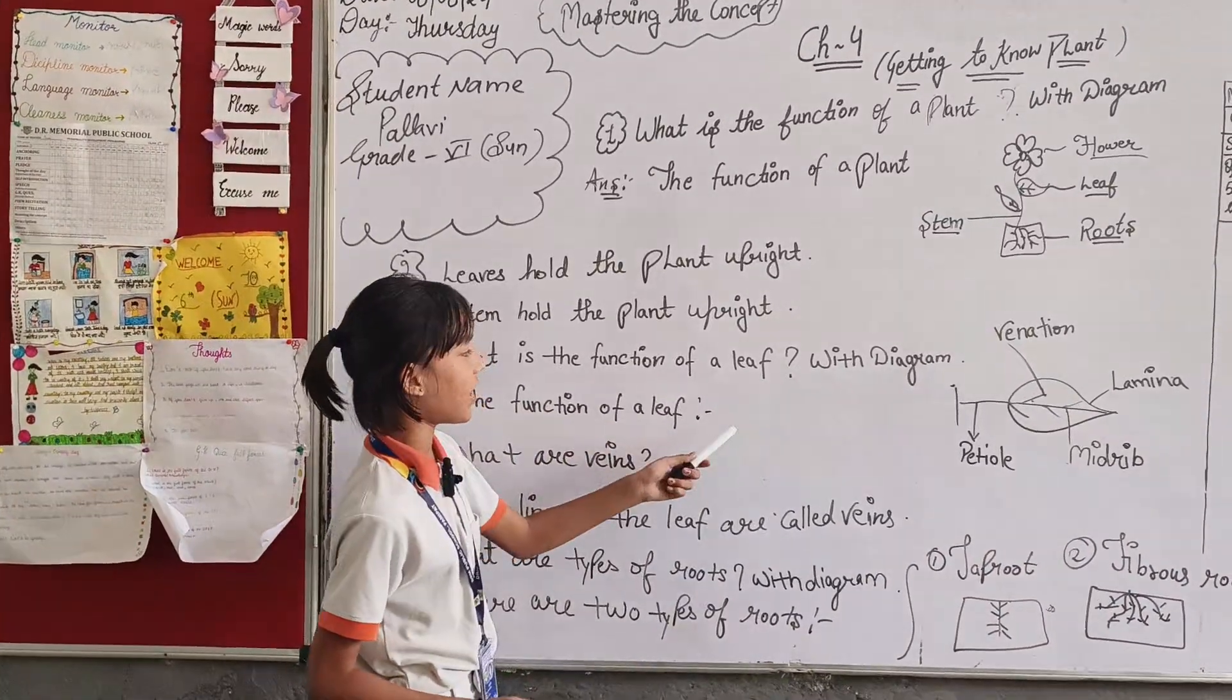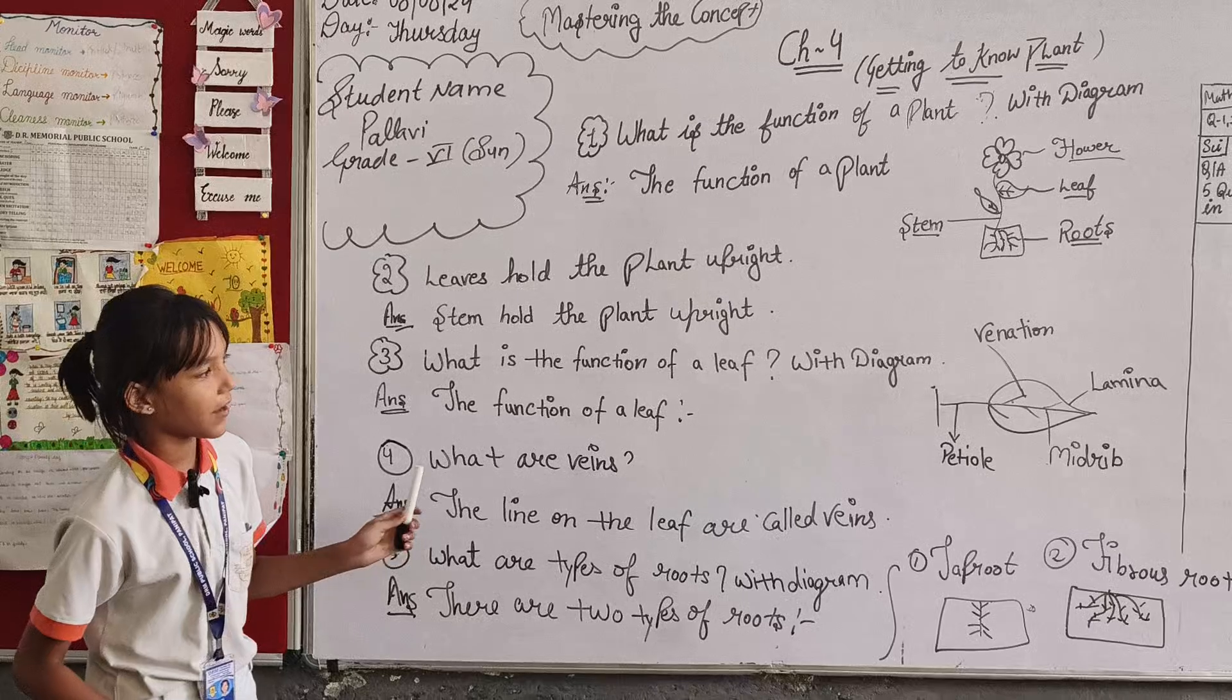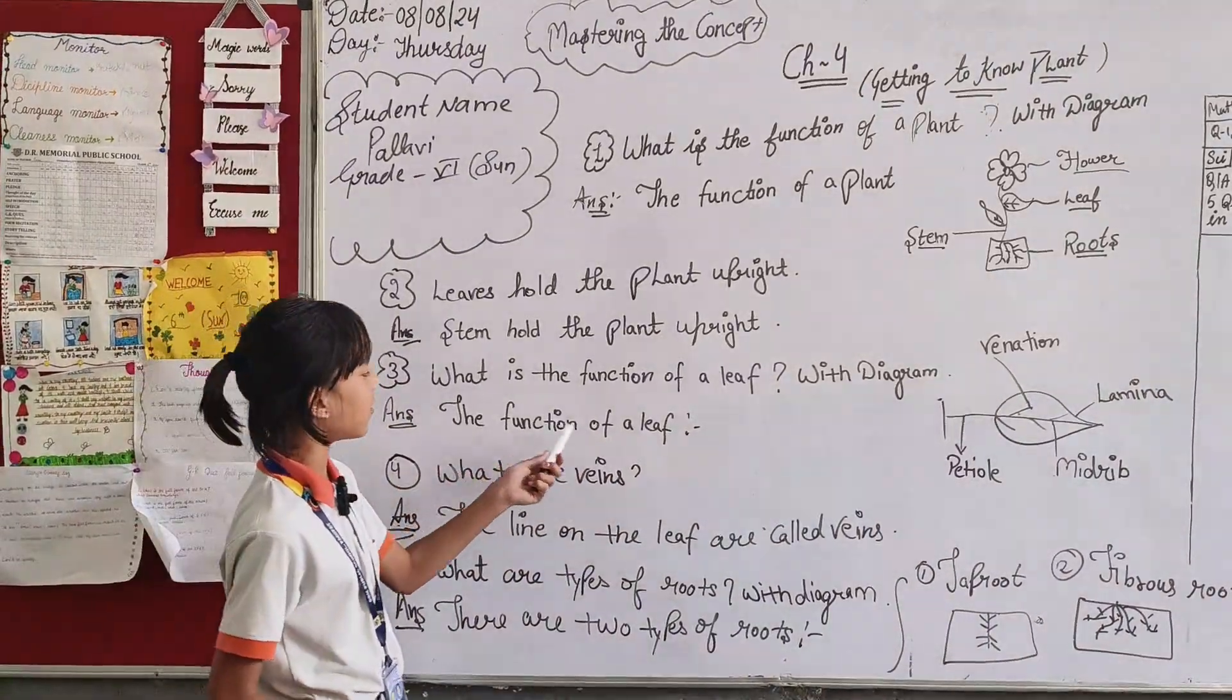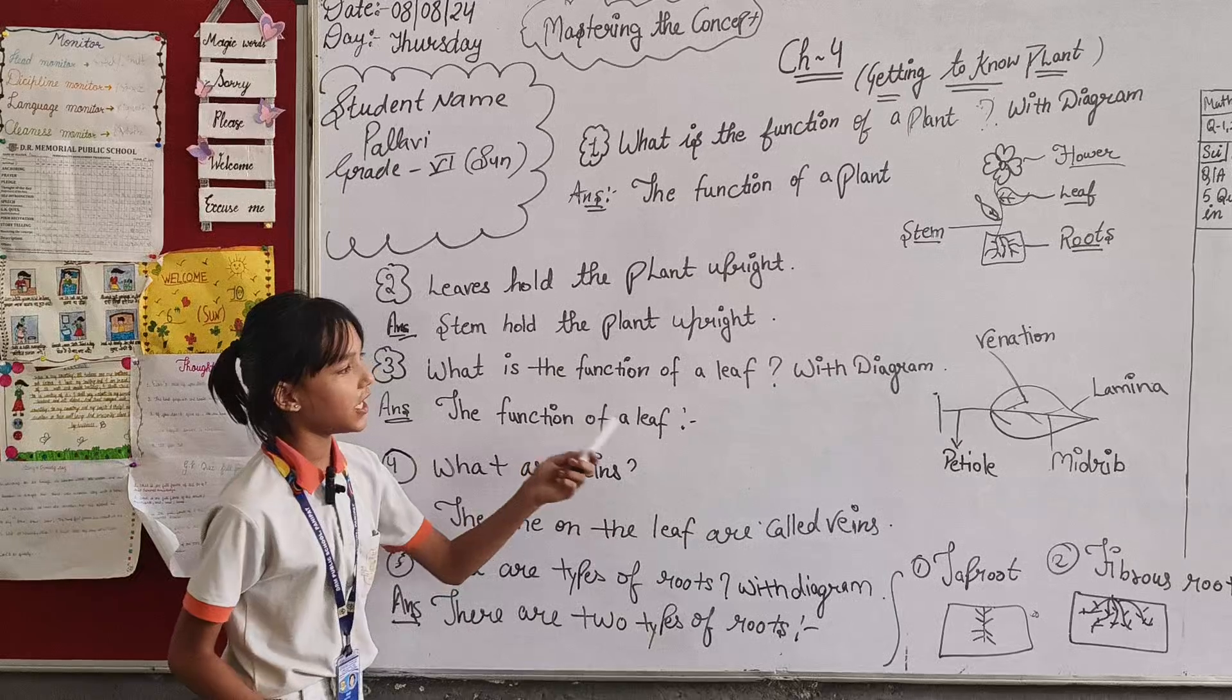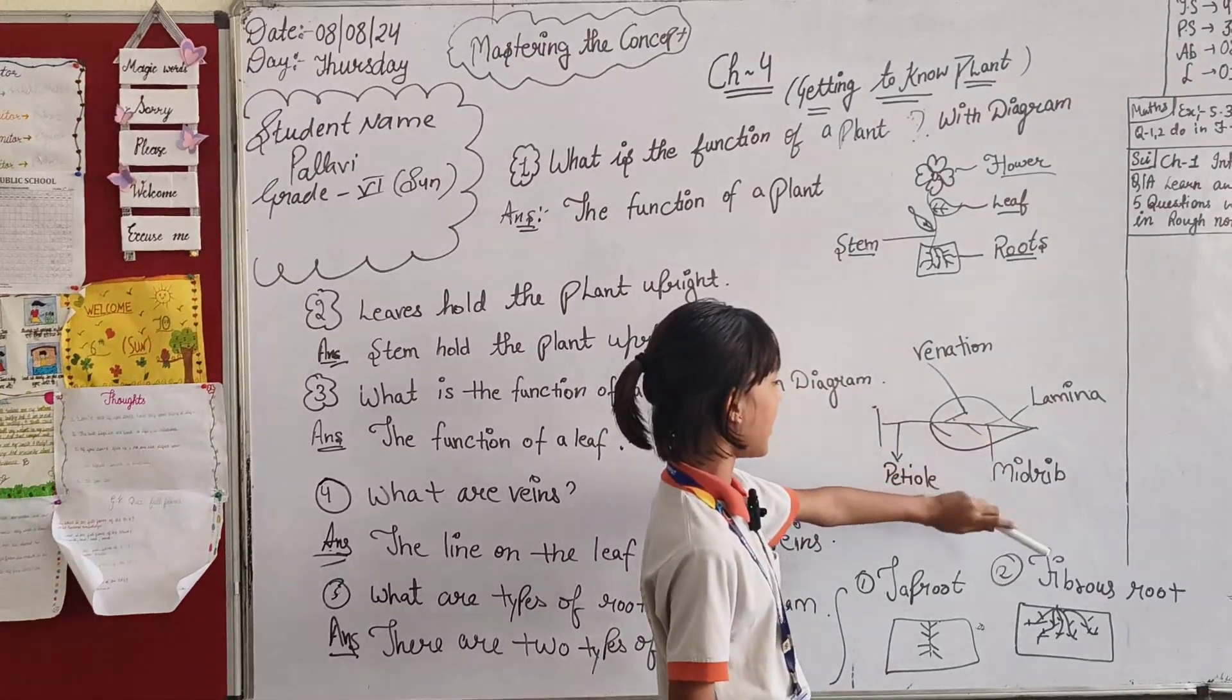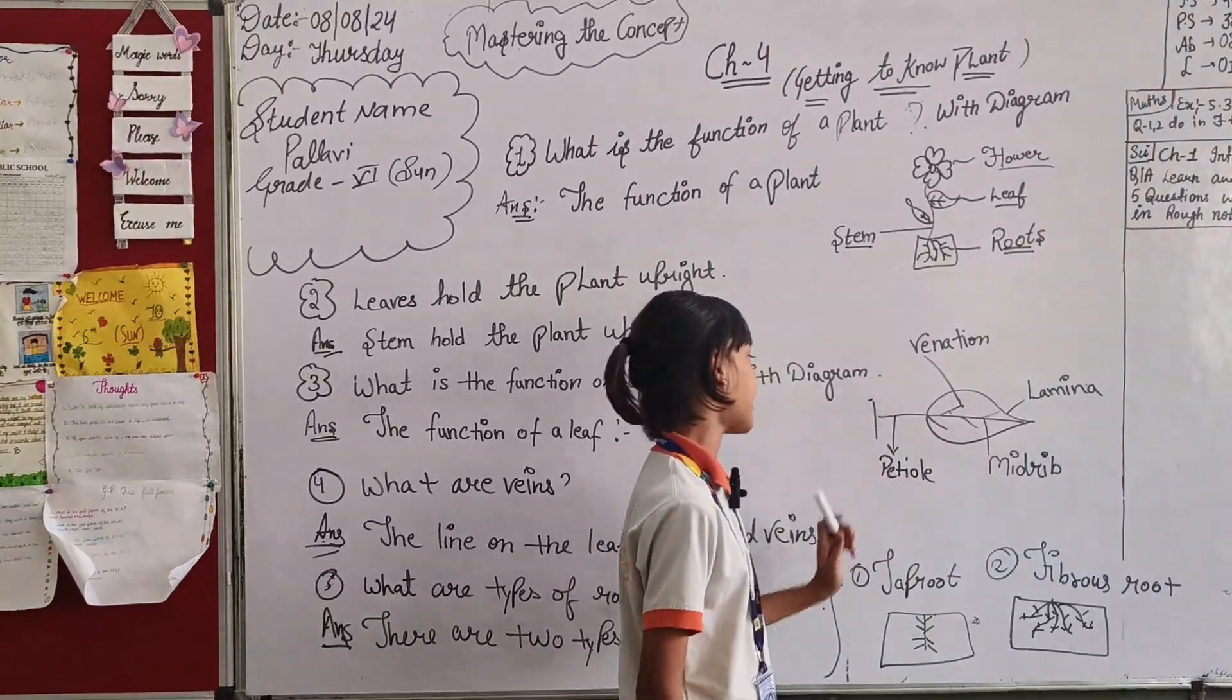Third question, what is the function of a leaf? Leaf, with a diagram. The answer is the function of a leaf. Leaf is making the function of a leaf with veins, lamina, midrib and petiole. Fourth is the diagram, this is the lamina, this is the midrib, this is the petiole.